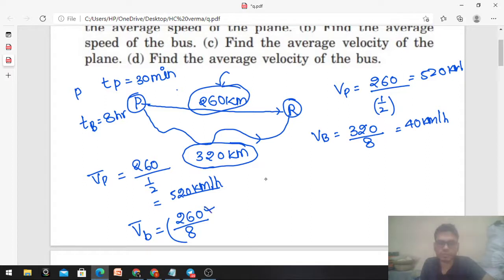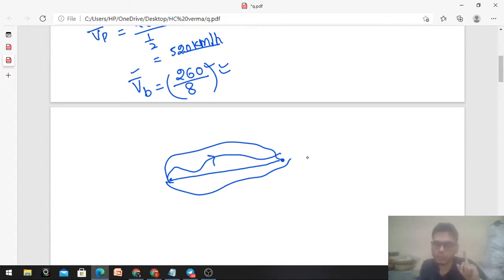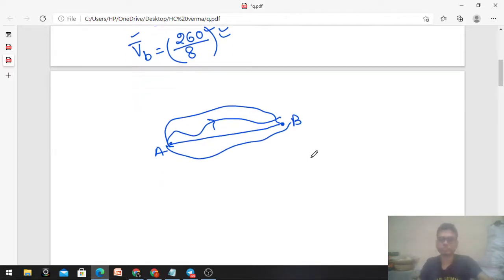So you have to use 260 upon time, that is 8. This is going to be your answer for the average velocity of the bus. Remember, whenever there are two points, the displacement between them is fixed. That is the shortest path. This distance can be infinite - this is one distance, this is another distance. So distance possibilities are infinite, but displacement will be fixed. Its magnitude will be fixed. Direction can be two: A to B or B to A. But the magnitude, that will be a constant quantity.